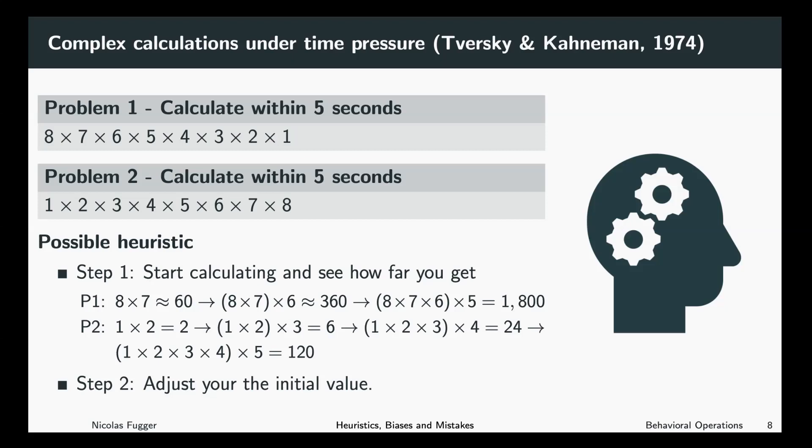However, as you see, your initial value, your anchoring, your anchor, is way higher in problem one, which would then be in line with the result that we observe, that the estimates from group one are way higher than the estimates from group two. So here, this slide should show you that anchoring might be explained by the use of heuristics, at least in this setting.